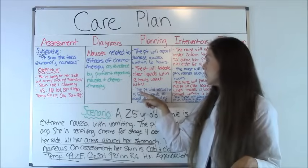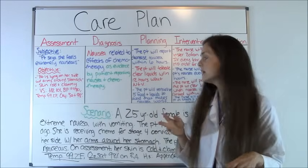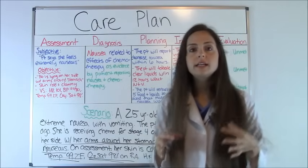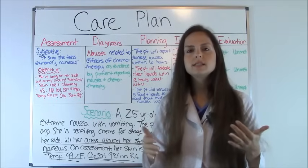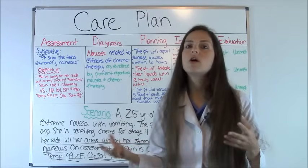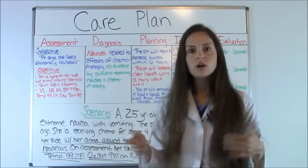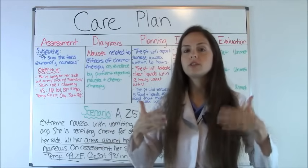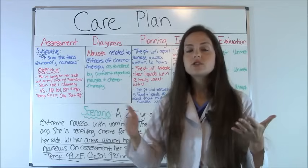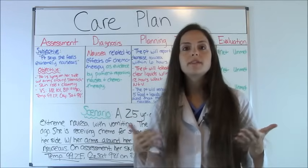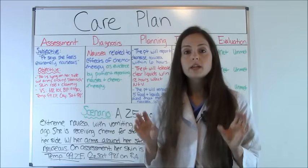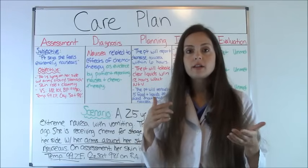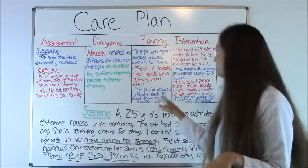The third goal: the patient will verbalize five foods and liquids to avoid that make the nausea worse. Typically, patients receiving chemotherapy become really sensitive to foods that normally wouldn't affect other patients, leading to food intolerances. You'd only know this by reading through your nursing texts and understanding how chemotherapy affects patients. It's a really good goal for chemotherapy patients with nausea because it may be triggered by a smell or a certain food.